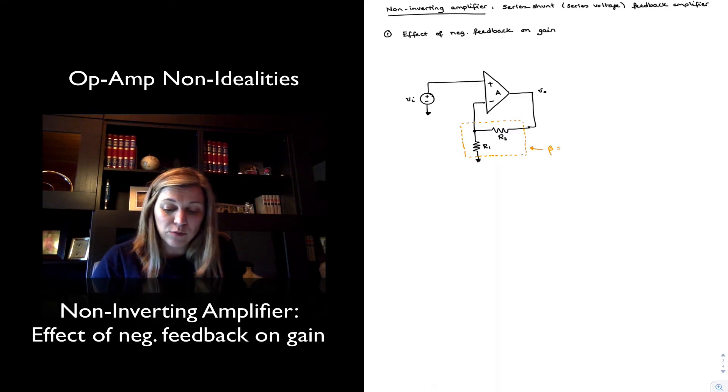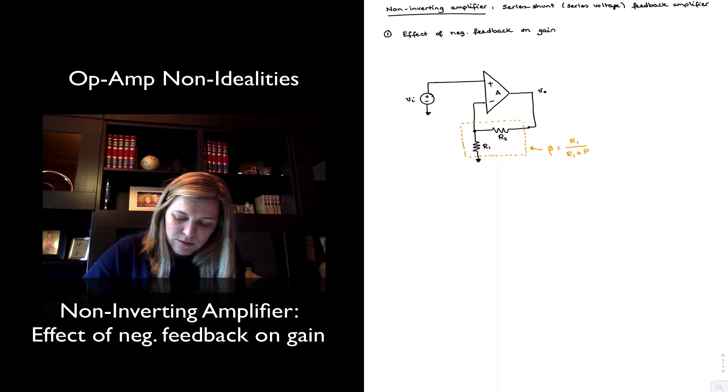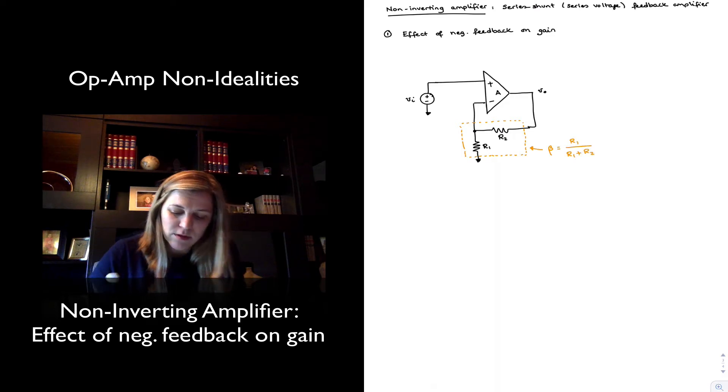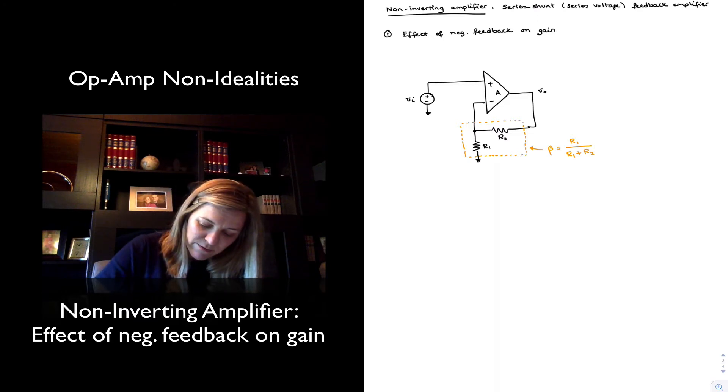In this case, I have a voltage divider. My input signal, which is Vout, is going to be multiplied times this voltage divider equation, which is going to be R1 divided by R1 plus R2 to give me my feedback signal. I will have my feedback voltage here. It's basically going to be beta times Vout.